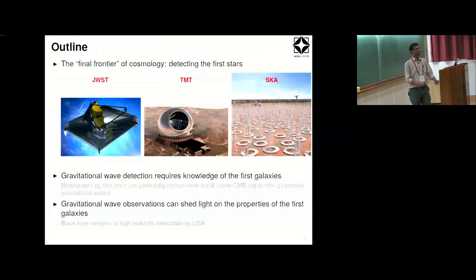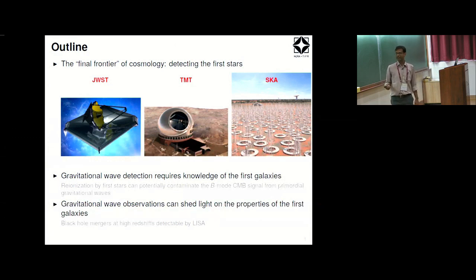And then there is a reverse thing. The moment you start detecting gravitational waves or you observe gravitational waves maybe from these epochs, they can start shedding light on the properties of first galaxies. So the first galaxies can make the detection difficult but once you start detecting you can learn a lot about first galaxies. Here I will choose a slightly different example that has to do with the supermassive black hole mergers at high redshifts which will be detectable by the so-called low frequency gravitational wave detectors.